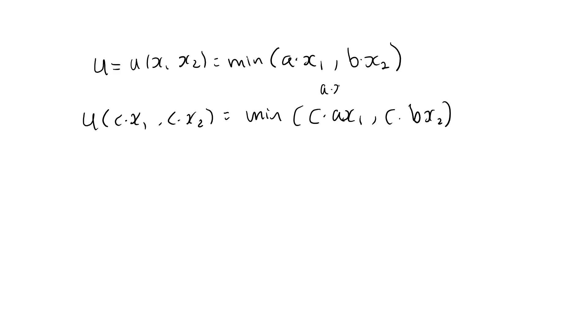Now, if a times x1 is less than b times x2, then this min becomes a times x1. Well, in that case, since c is a strictly positive constant, c times a times x1 must be less than c times b times x2, and this min becomes c times a times x1, which is precisely c times the utility function of x1, x2.